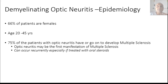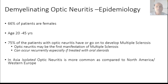Optic neuritis may be the first manifestation of multiple sclerosis. If treated with oral steroids, demyelinating optic neuritis tends to recur, which can be more detrimental to vision because it results in more damage to the optic nerve. In the Asian subcontinent, we see more isolated optic neuritis compared to optic neuritis in association with multiple sclerosis — this is thought to be due to less thorough investigation, compared to North America or Western Europe.